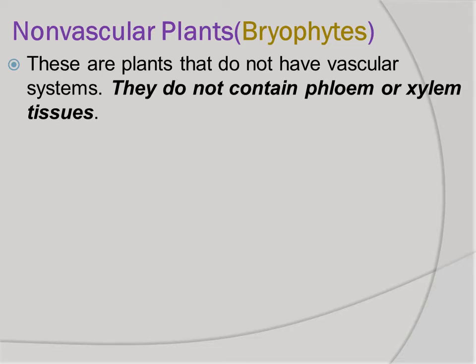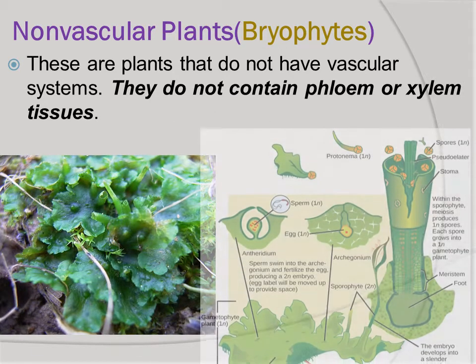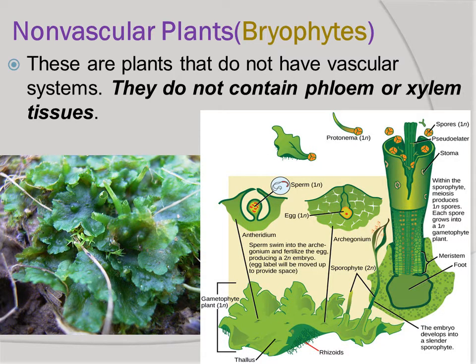Bryophytes are non-vascular plants. They are small and they do not have true roots, stems, and leaves. Non-vascular plants do not contain phloem or xylem tissues, but they have special tissues for transporting water and nutrients.